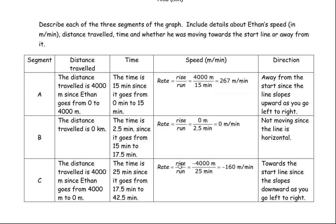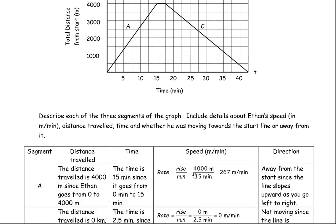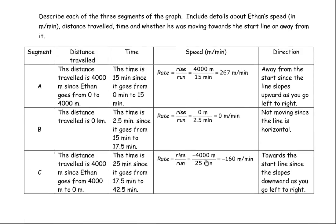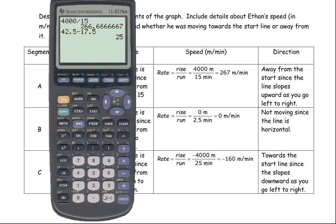So the rate would, the rise would be negative 4,000 again, because he went 4,000 closer, as opposed to 4,000 away. So negative 4,000 divided by 25, and one more time, we'll bring the calculator back here. So negative 4,000 divided by 25 minutes, we get negative 160. And the units would be meters per minute again, because that distance is in meters, this time is in minutes. So that's the rate, rate units.